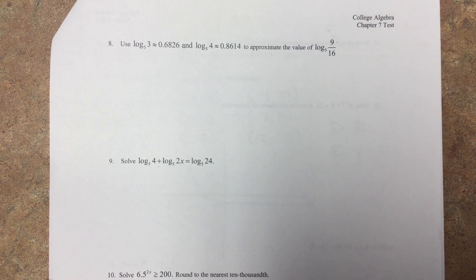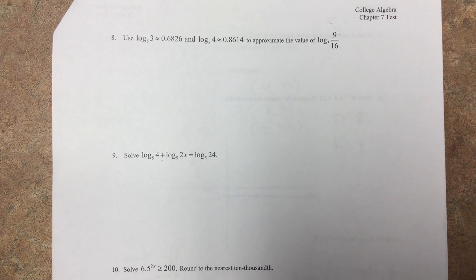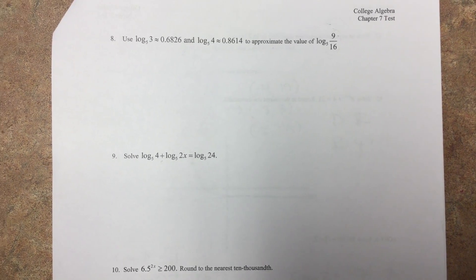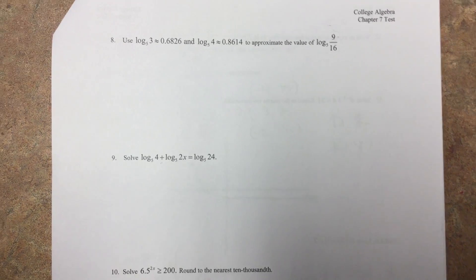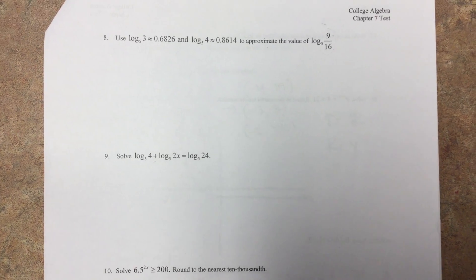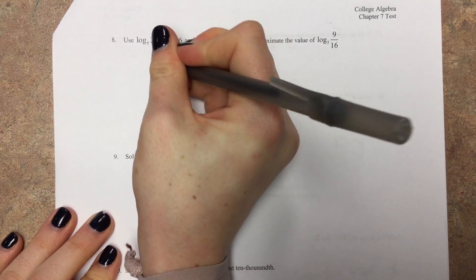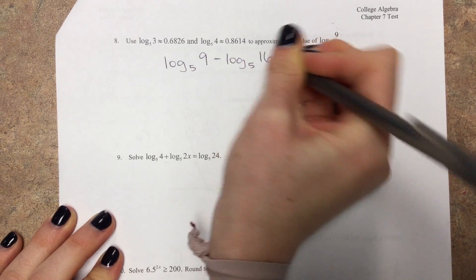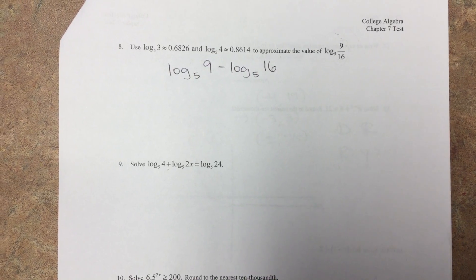Number 8 was a disaster for many of you. A lot of you made up your own properties — turning division into division and squaring into squaring. If division just stayed as division, we wouldn't need specialized properties. When you expand a division inside a log, division turns into subtraction. Separate it out like that.